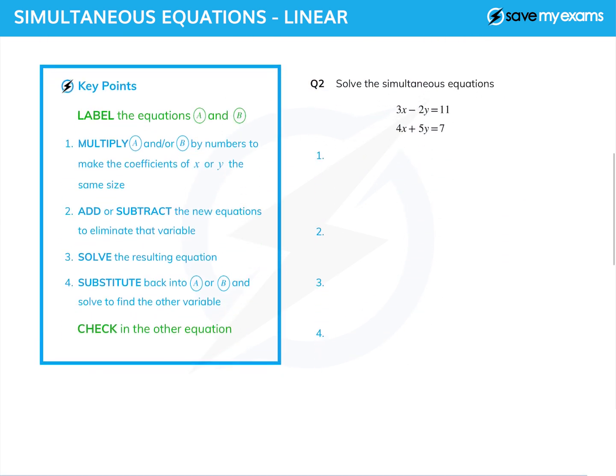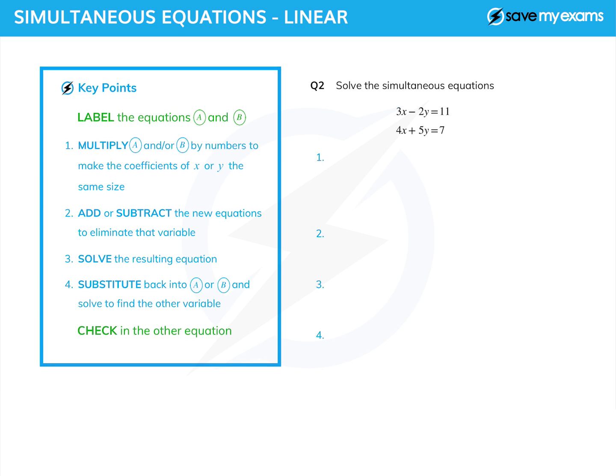They do get a little bit more complicated. Sometimes you'll have to do something to both equations in order to balance the coefficients of one of the things. So I'm going to call them A and B again, as we have done in the previous question. And I'm going to decide which way I'm going to do this. I could balance the x's by multiplying the first one by 4 and the second one by 3. Or I could balance the y's by multiplying the first one by 5 and the second one by 2. It doesn't really matter which I do. I'm going to do it the second way. So I'm going to get 5 times equation A. And I'm also going to do 2 times equation B.